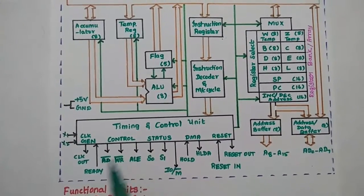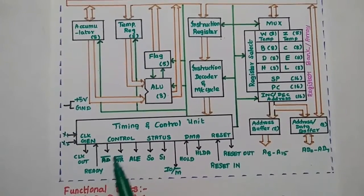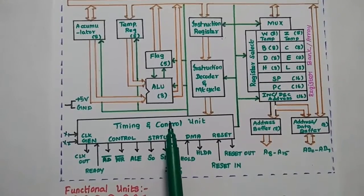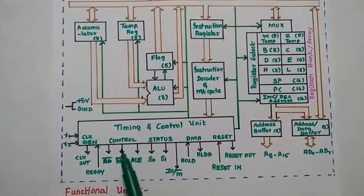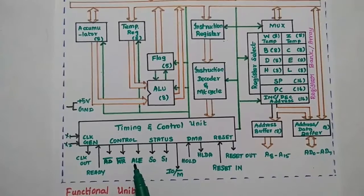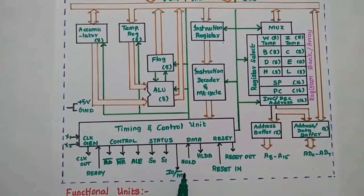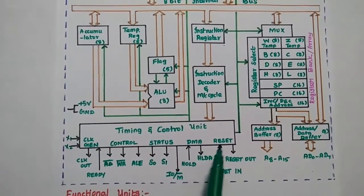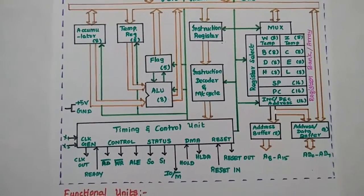The ready signal is used to ensure the microprocessor is ready to receive and transmit data. There are three control signals: Read bar, Write bar, and ALE. Status signals include S0, S1, IO bar, and M bar. Direct memory access signals are HOLD and HLDA, and reset signals are Reset In and Reset Out.